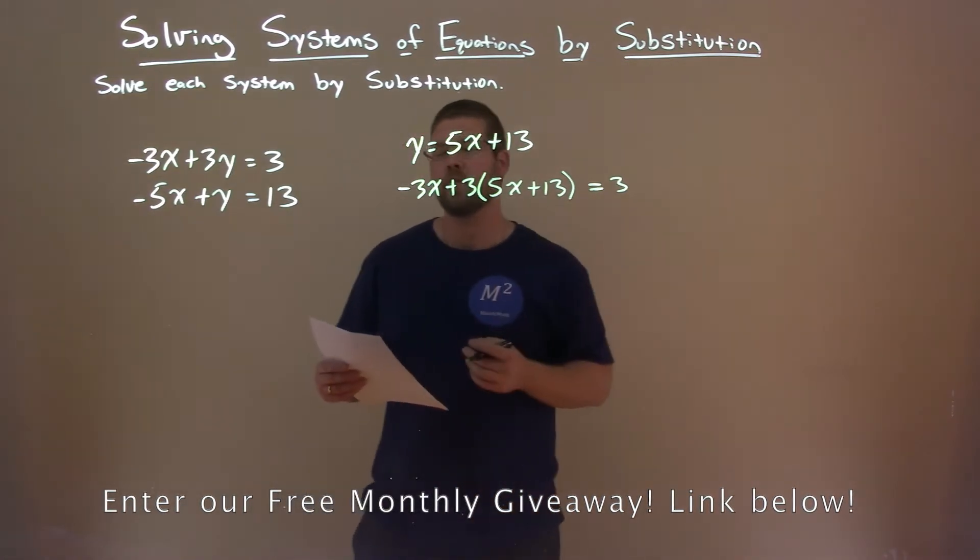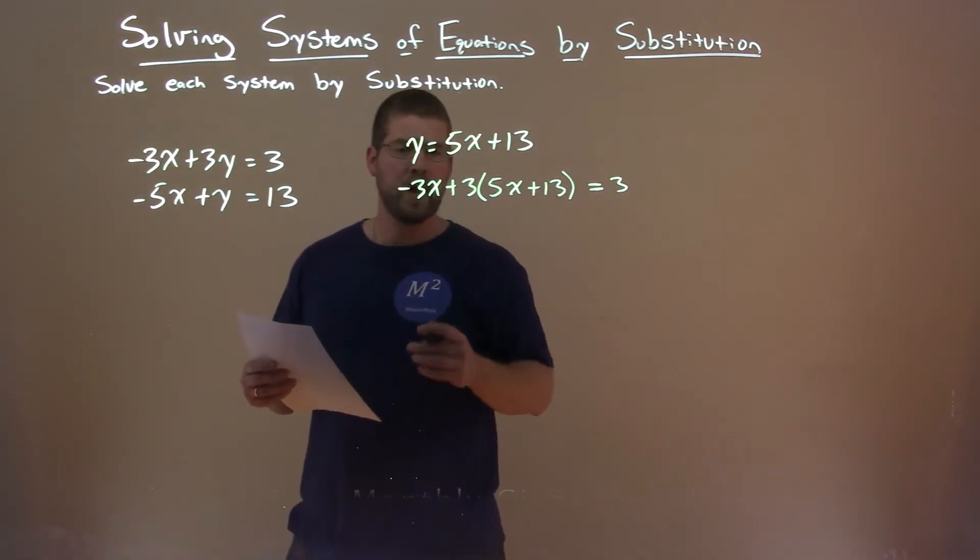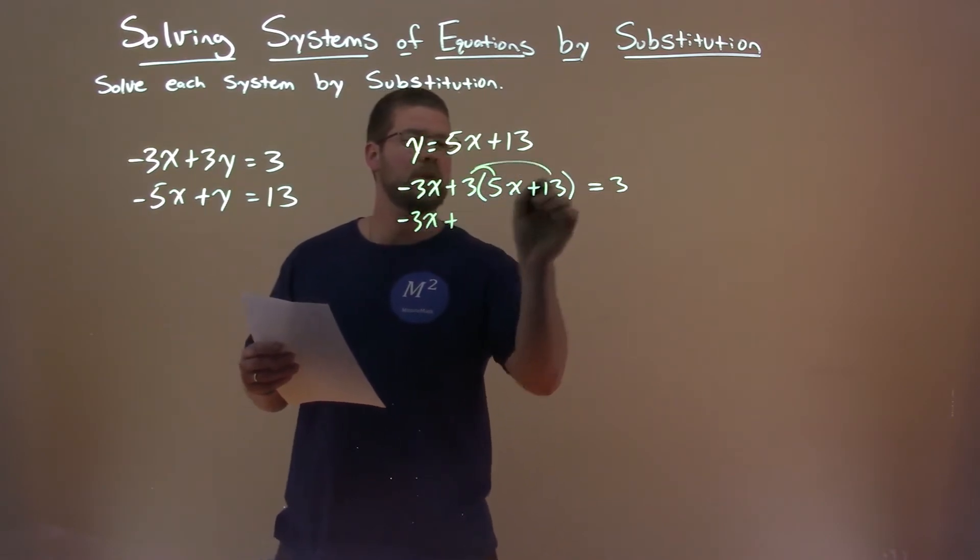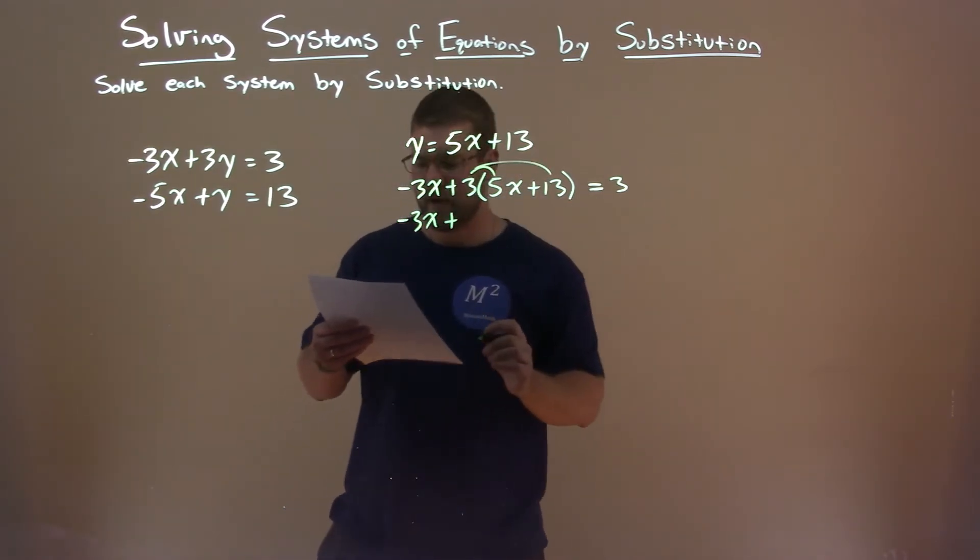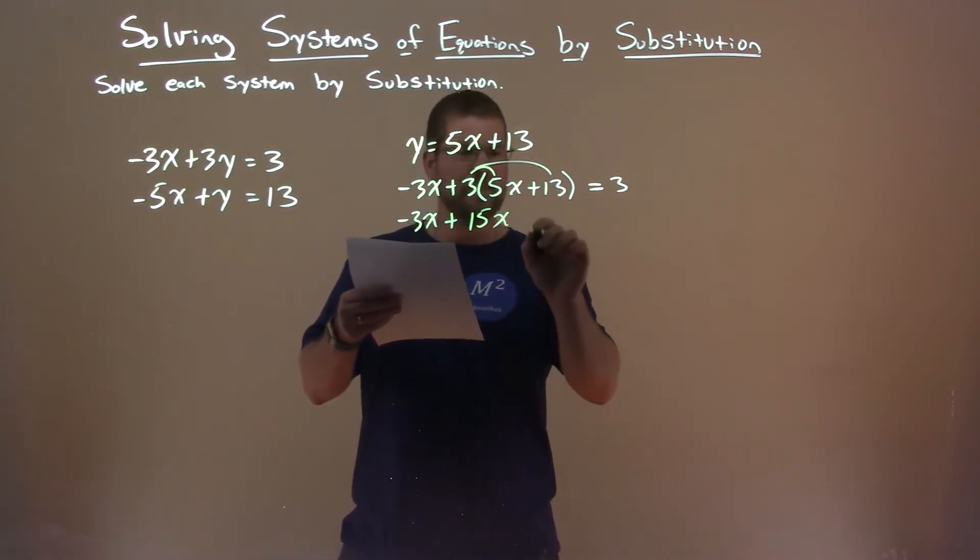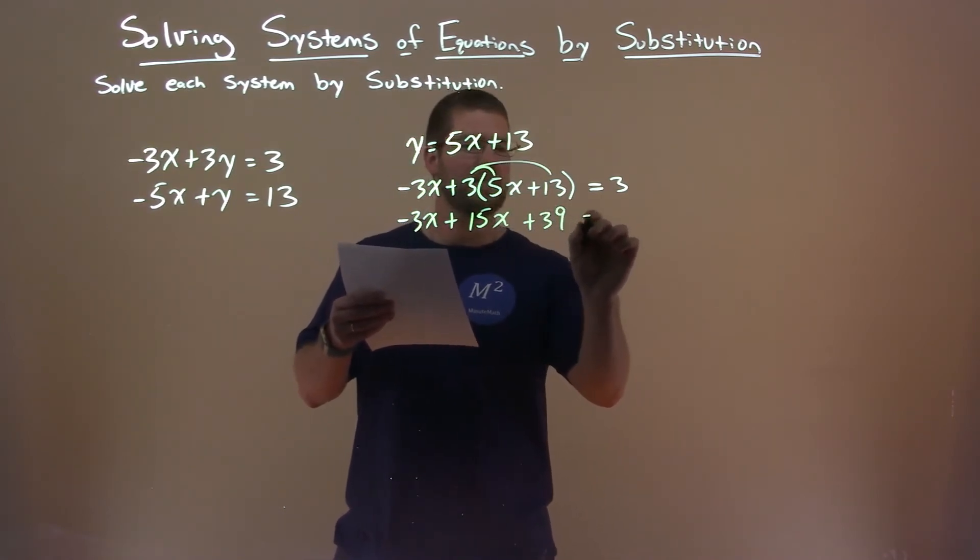Where do we go from here? We've got to solve for x. -3x comes down, plus distribute 3 to both parts. 3 times 5x is 15x, 3 times 13 is 39, and that equals 3.